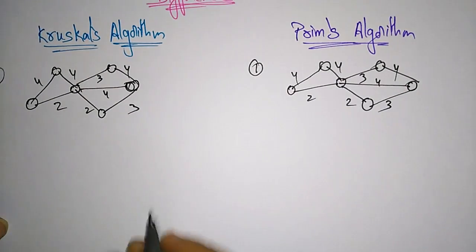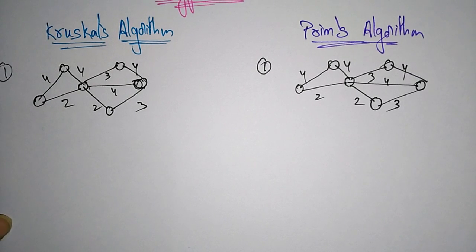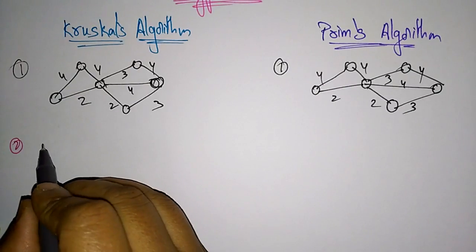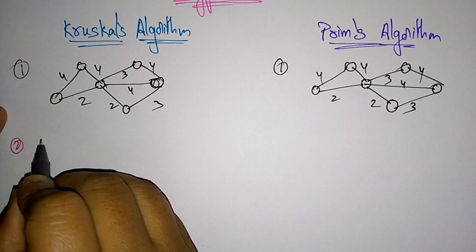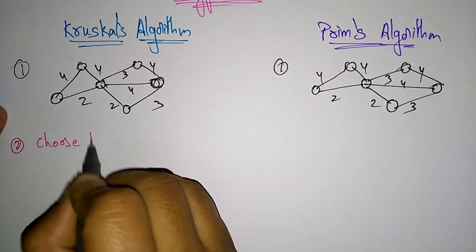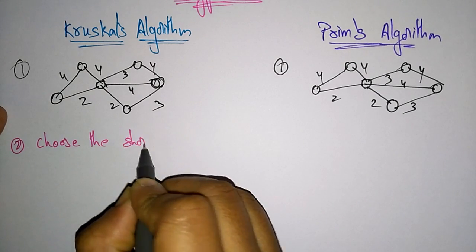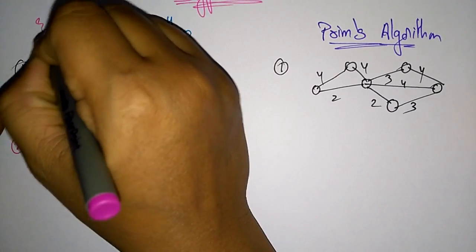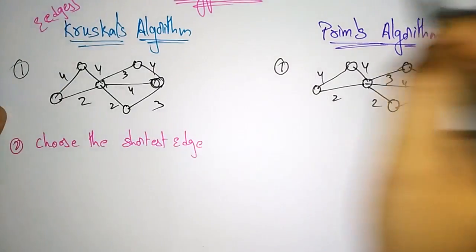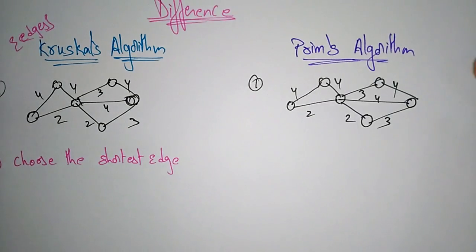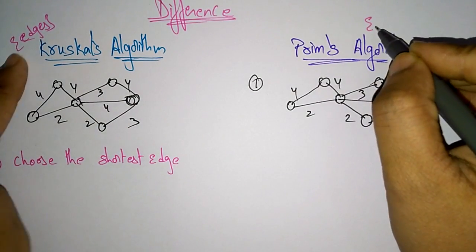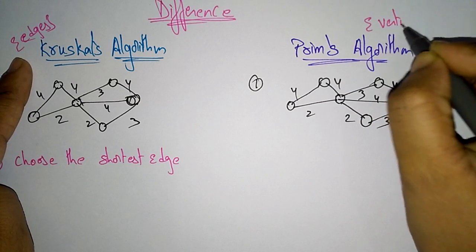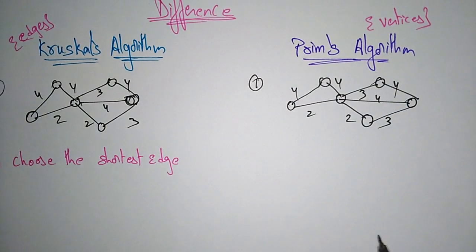So I have taken the same network with the same weights: 4, 2, 4, 3, 4, 2, 3. Now let us observe here. In the second step for Kruskal's, we have to choose the shortest edge. Everything is based on edges — we calculate the weight based on edges and select edges with minimum cost.